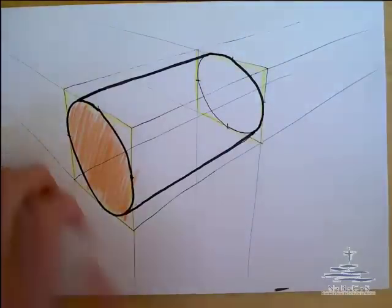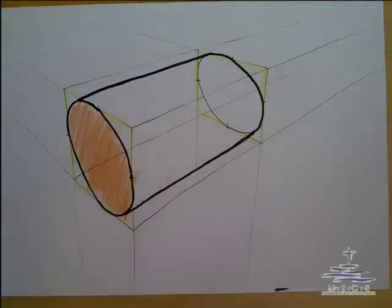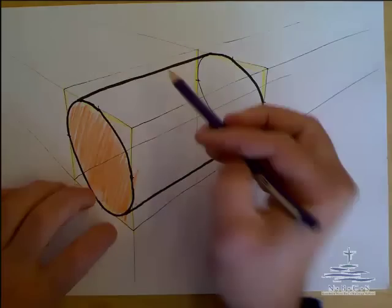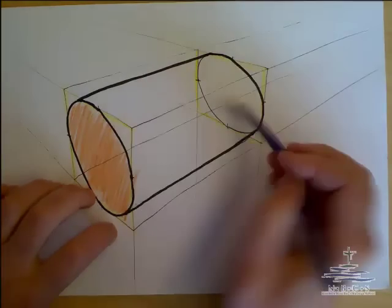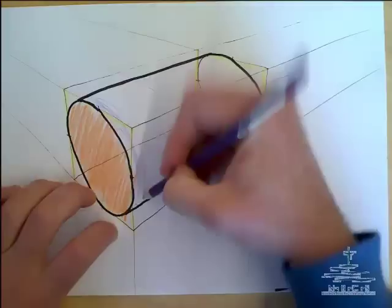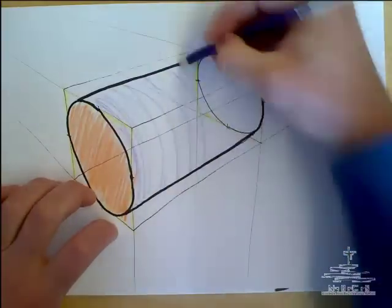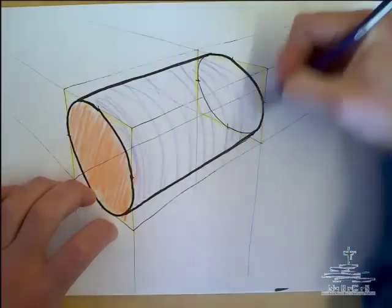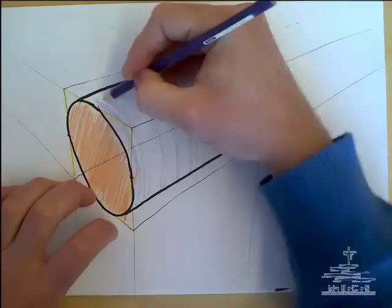And the other thing that we're going to be doing for our cylinder is some rendering on this side. There's a number of different ways. You could go left to right like that. Another way that you might want to do it is to emphasize that curve shape. So you could go this way as you start to do your cylinder coloring.